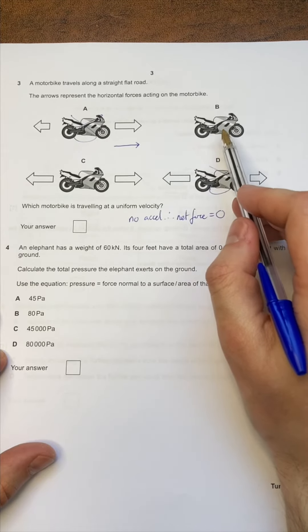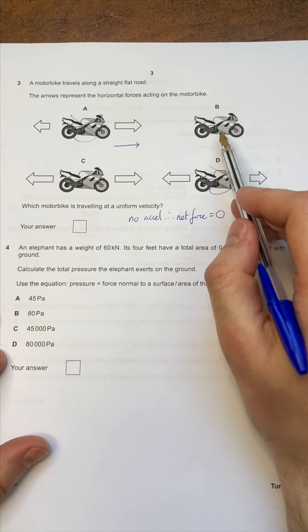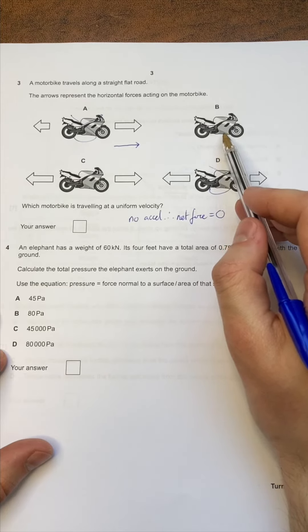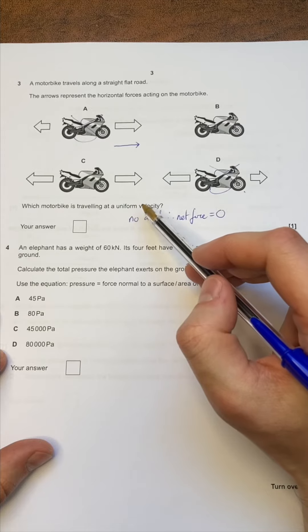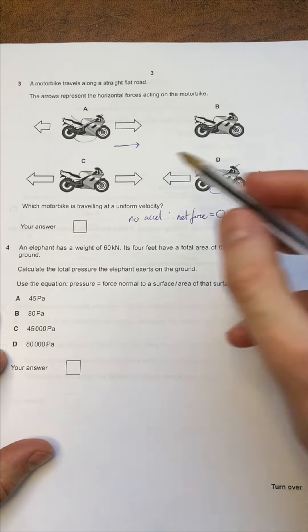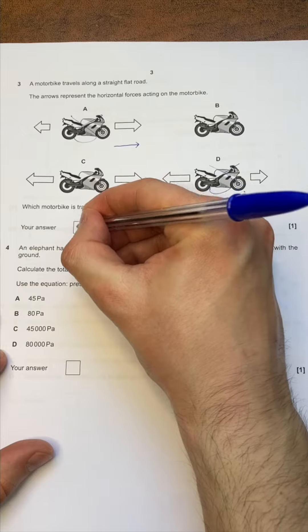So if anything, even though this motorbike is travelling at a uniform velocity, the uniform velocity is 0 because it's stationary, it's not even moving. So for our motorbike to have a uniform velocity, it has to actually be travelling and not accelerating. It is C.